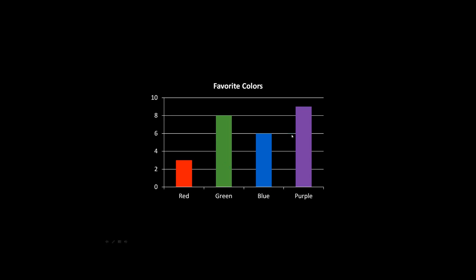That means we can tell the values of the bars. You can see red goes halfway between two and four — the only whole number between two and four is three. So we know that three students had red as their favorite color. Green stops on the line at eight, so we know that eight students' favorite color was green.